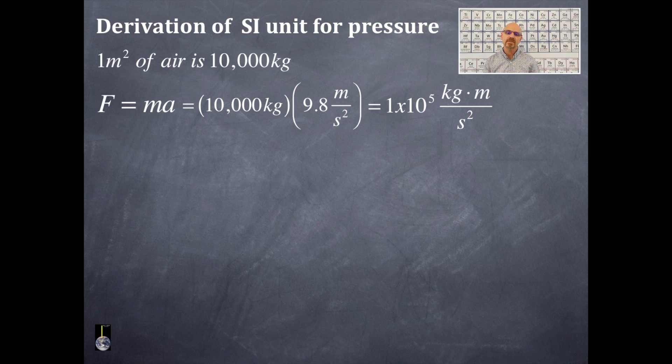Kilograms times meters divided by seconds squared has another set of units, and that is called the Newton. 1×10^5 kg·m/s² is equal to 1×10^5 Newtons. Not fig Newtons. That's different.